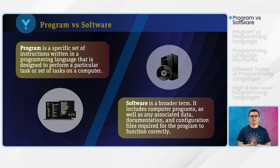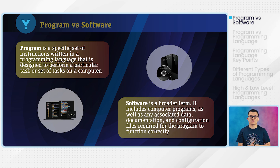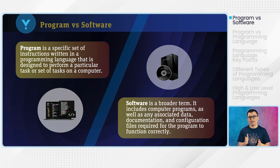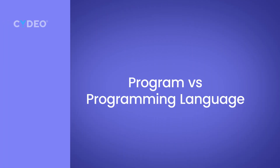In other words, a program is just a type of software. But software includes not only the program itself, but also the documentation and any other resources that are required to operate a computer system. That's the difference between program and software. Next, let's talk about the difference between program and programming language.